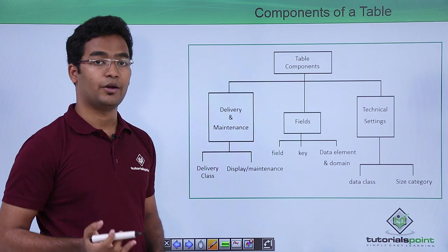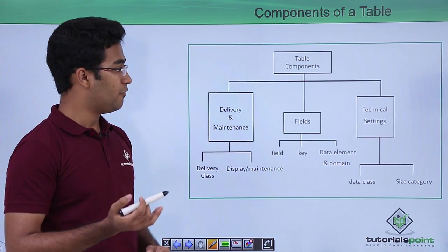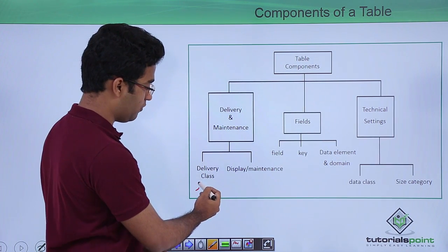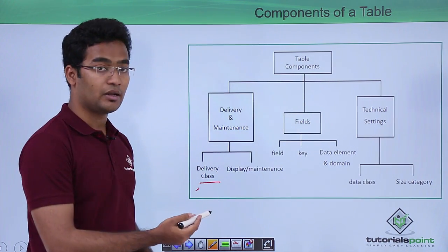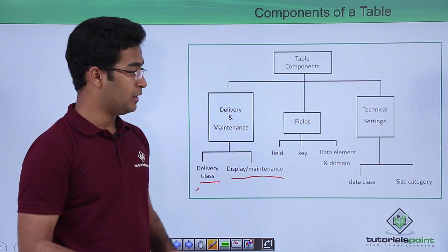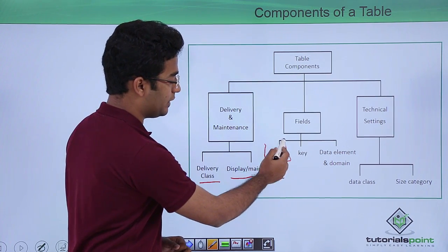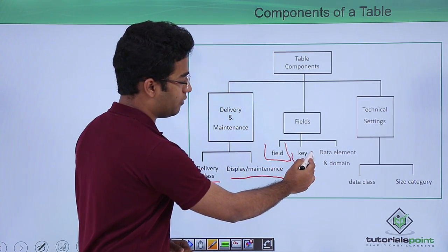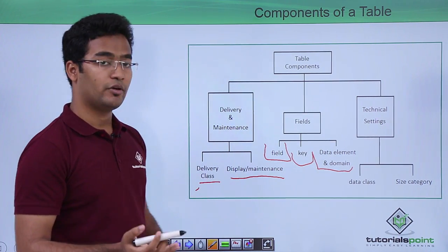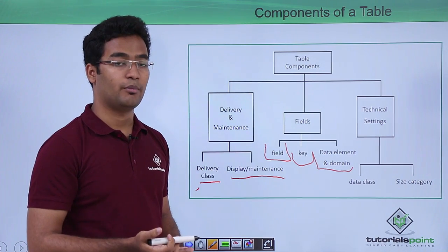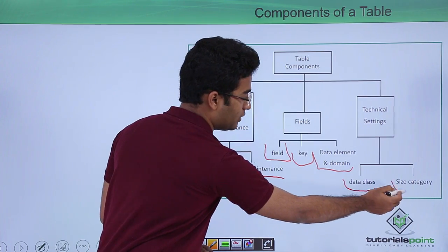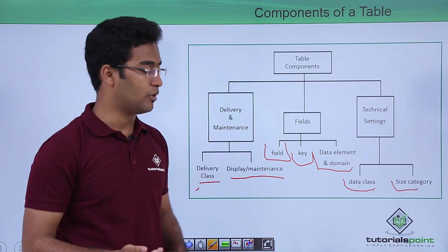Now let us see the components of the particular table. Overall, when we were creating the table we had to provide the delivery and maintenance settings. We had already provided the delivery class and maintained our display or maintenance mode. Then we created our fields and data elements, and also created the domains. At the end, when the structure of the table was done, we provided our technical settings — that is, the data class and the size category.